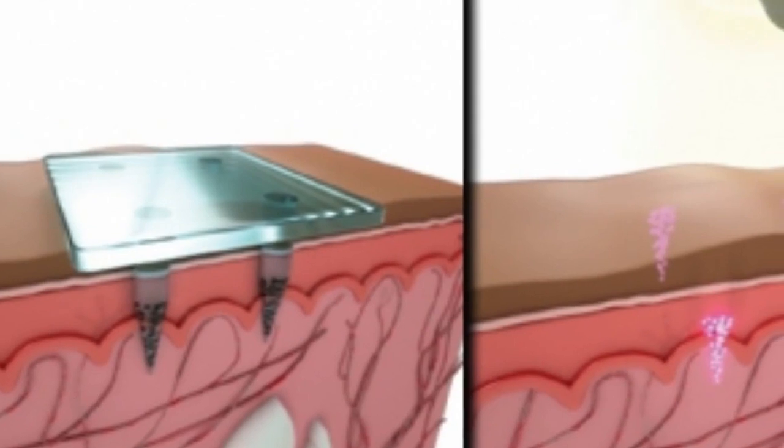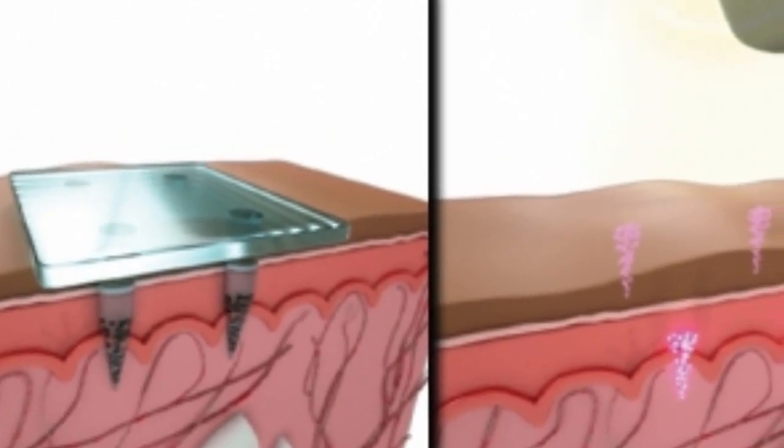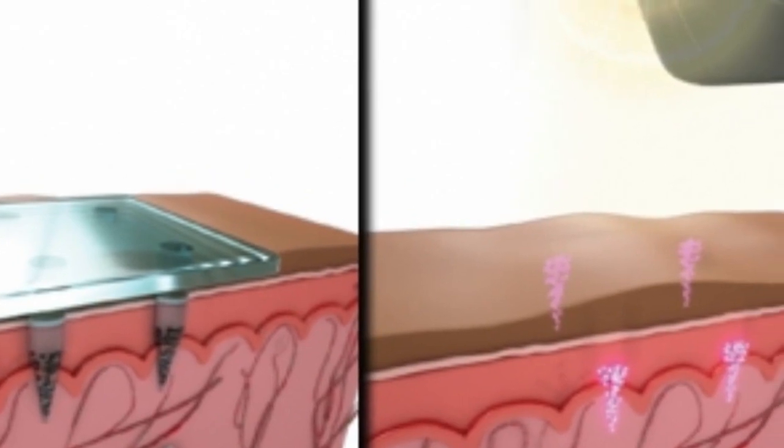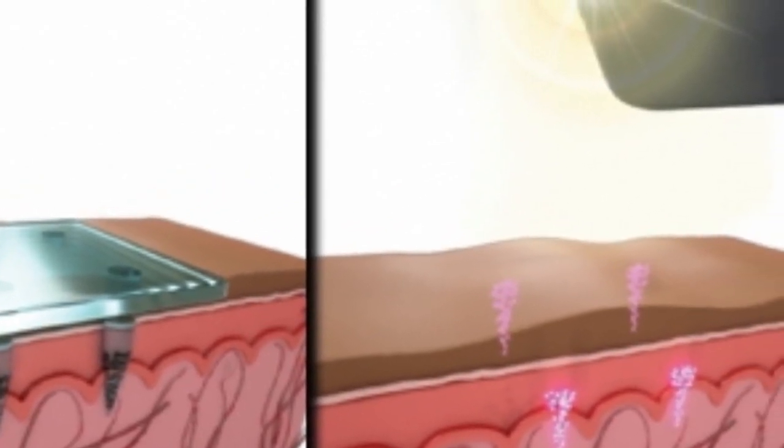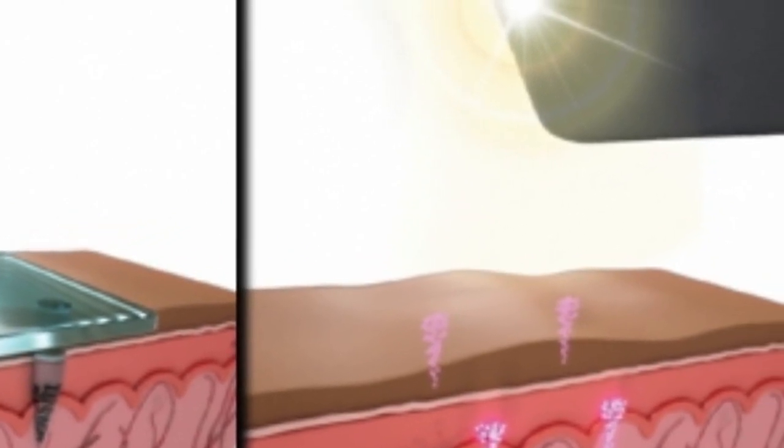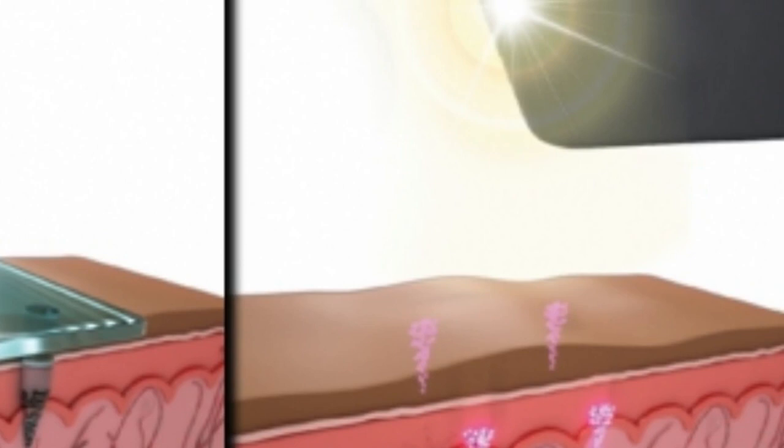By selectively loading microparticles into microneedles, the patches deliver a pattern in the skin that is invisible to the naked eye, but can be scanned with a smartphone that has the infrared filter removed. The patch can be customized to imprint different patterns that correspond to the type of vaccine delivered.